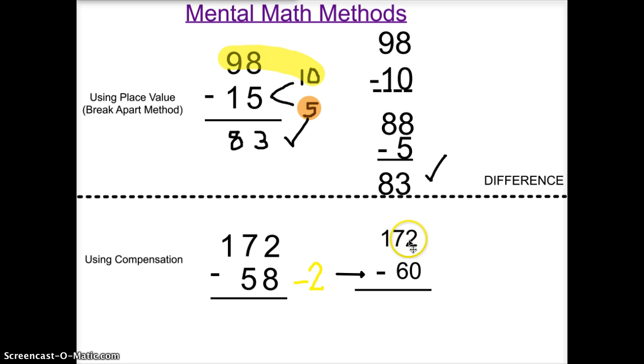Because in my head, subtracting 2 minus 0 is much easier than subtracting 2 minus 8. And I know that 2 minus 0 is 2. And in my tens column, 7 tens minus 6 tens is 1 ten. 1 hundred minus 0 is 1. So I'm left with a difference of 112.